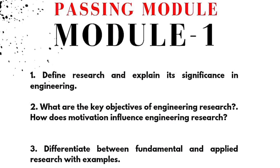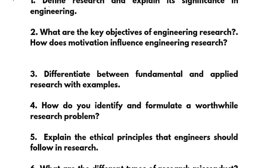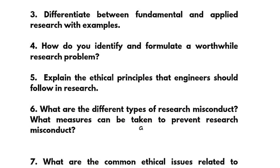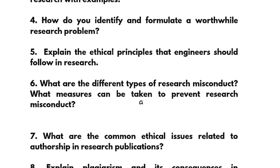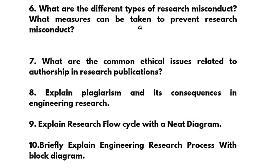First we have Module 1, which is a passing module. Important questions include: define research and explain its significance in engineering; what are the key objectives of engineering research and how does motivation influence engineering research; differentiate between fundamental and applied research with examples; how do you identify and formulate a worthwhile research problem; explain the ethical principles that engineers should follow in research; what are the different types of research misconduct and what measures can be taken to prevent it; and what are the common ethical issues related to authorship in research publications — explain plagiarism and its consequences in engineering research.